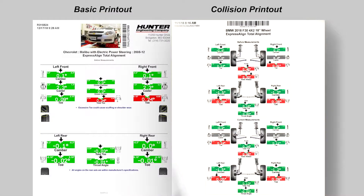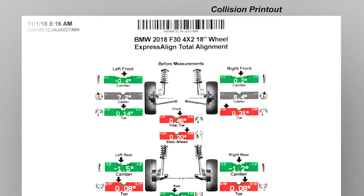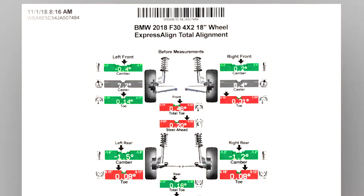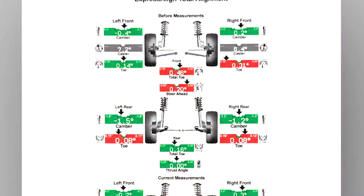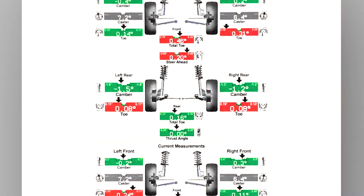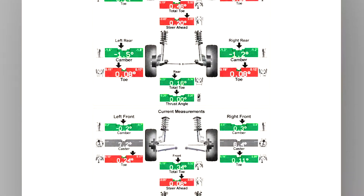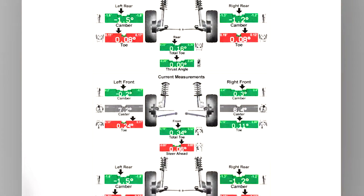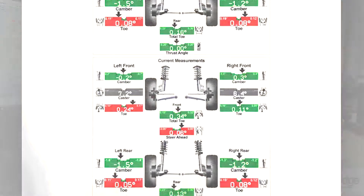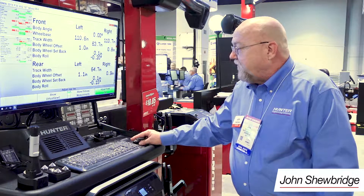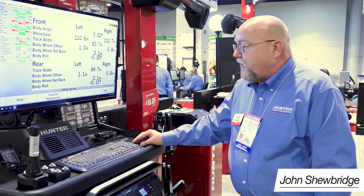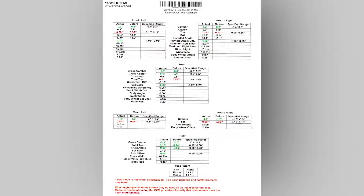A blueprint requires a special print. Most of you are familiar with our print vehicle before and current. What this printout shows is camber, caster, toe in the front, camber and toe in the rear. For an established blueprint, we need much more information than that. What most body shops and insurance companies are going to need is our print summary, which does in fact show all of the measurements.